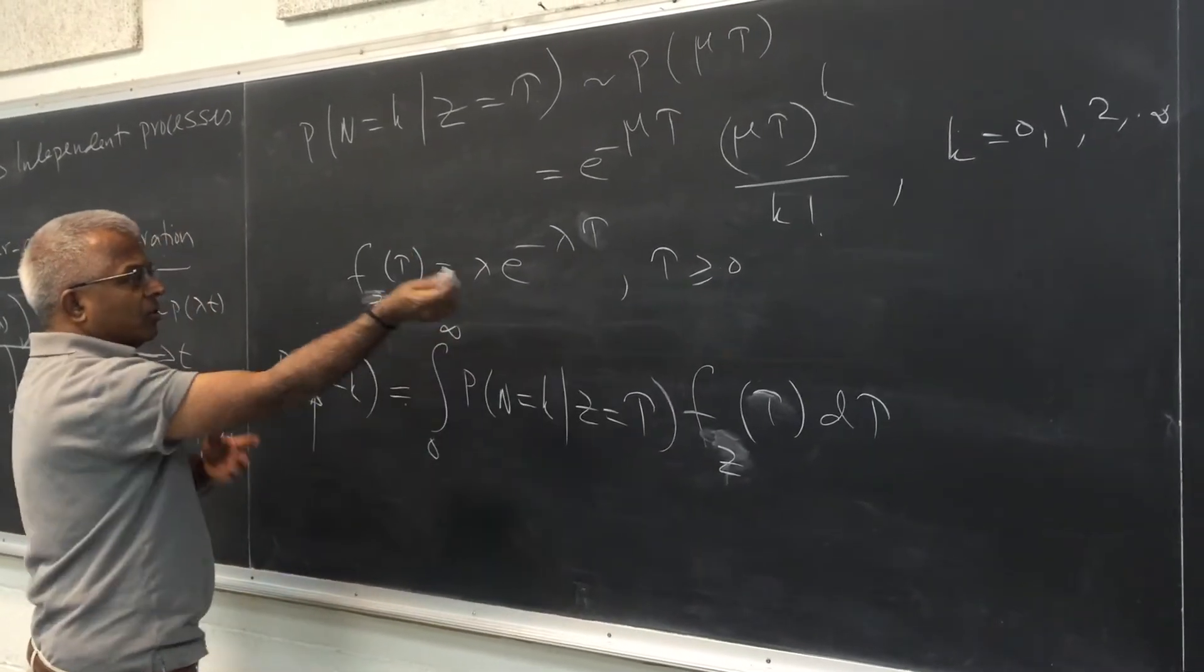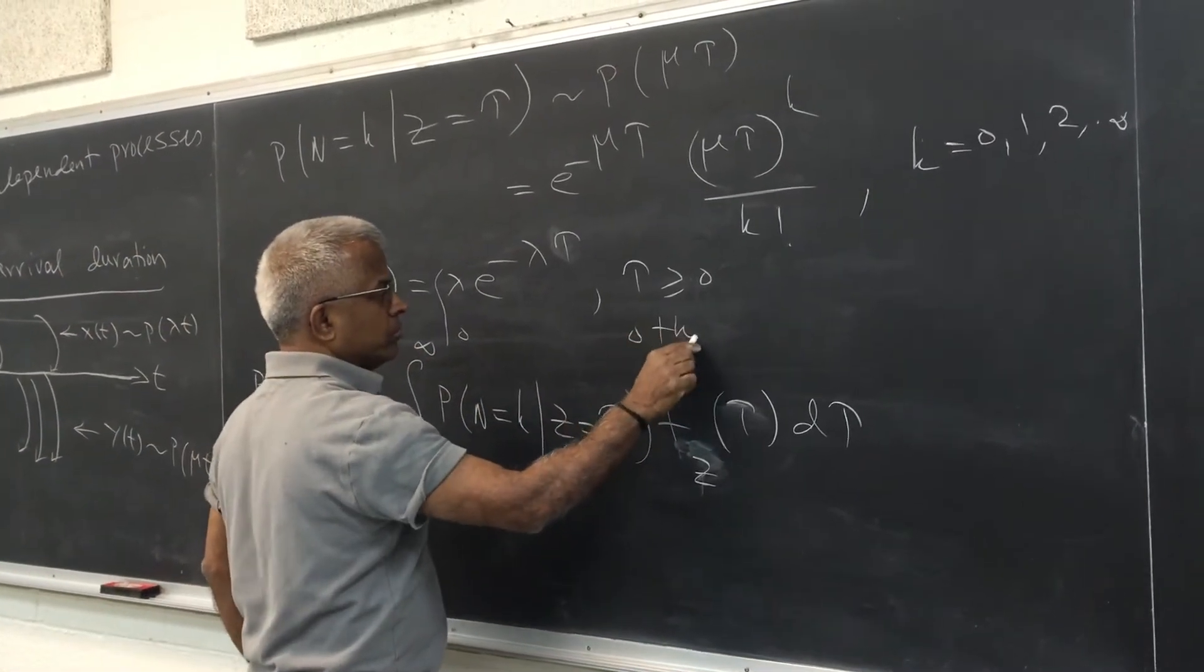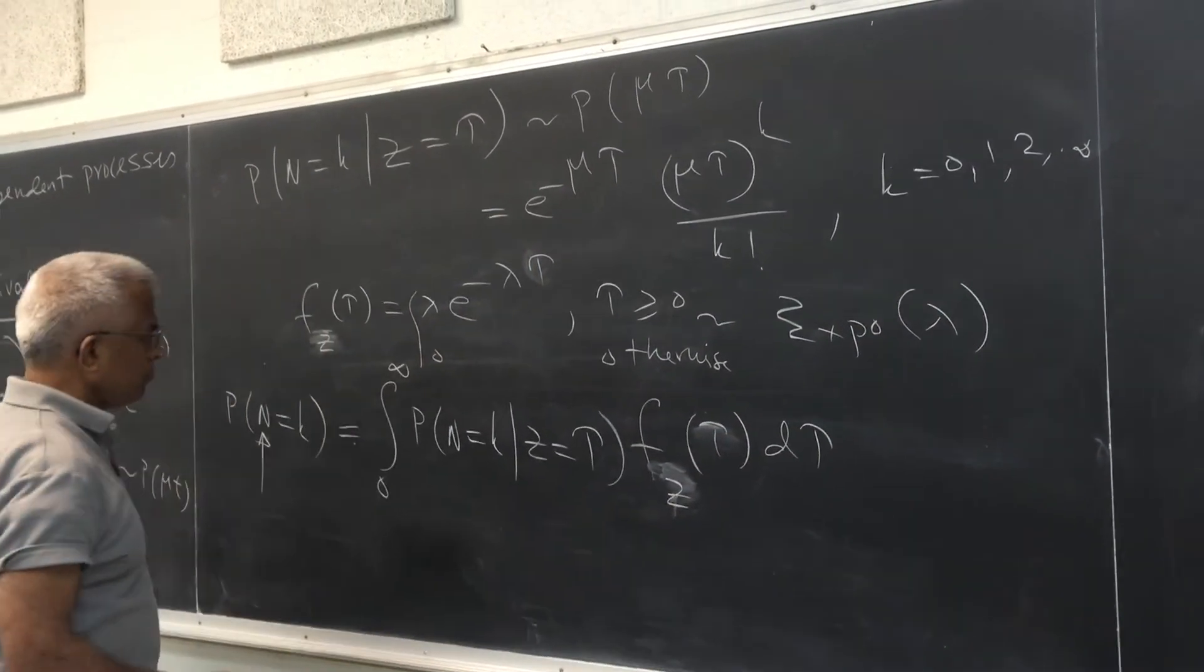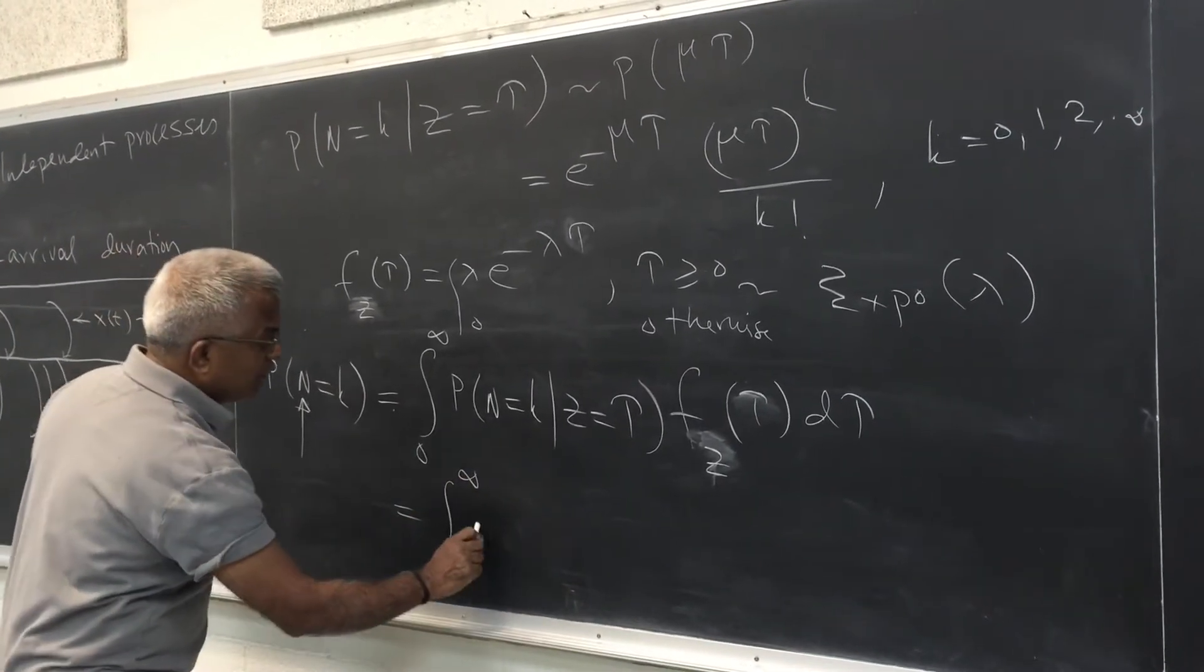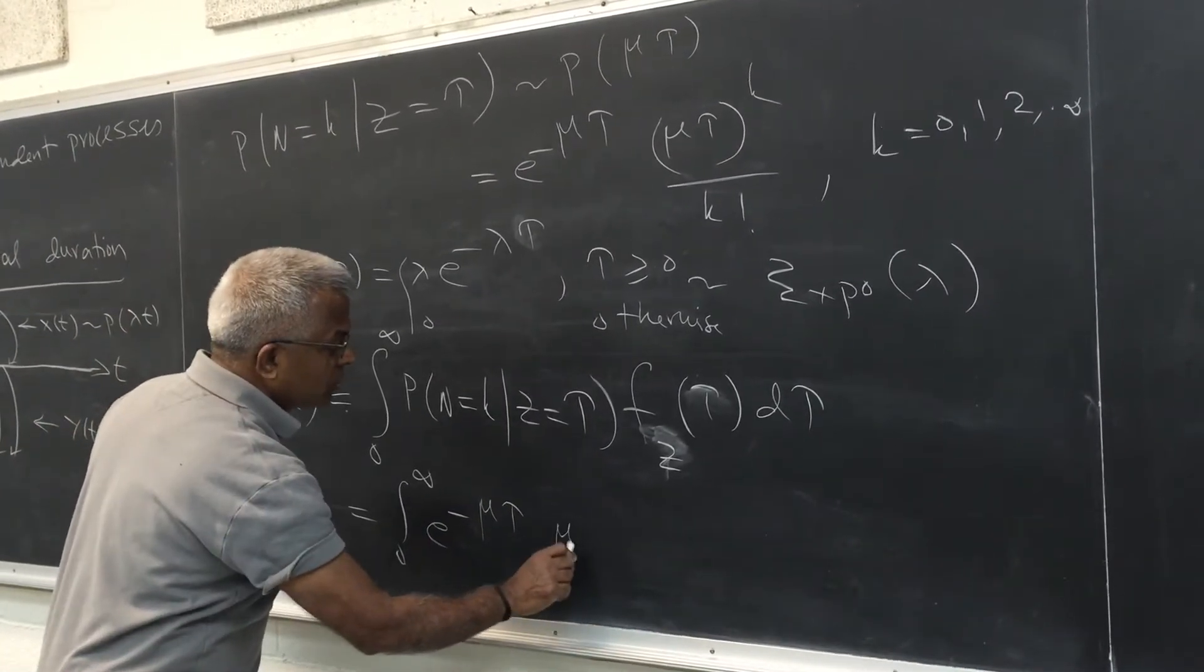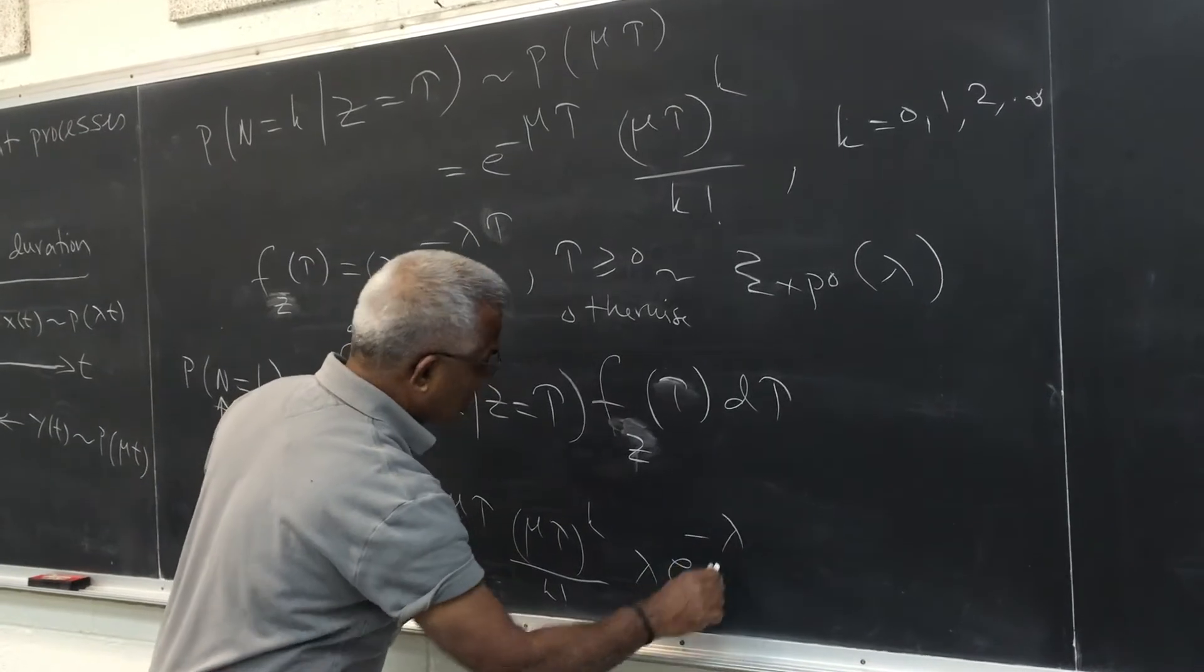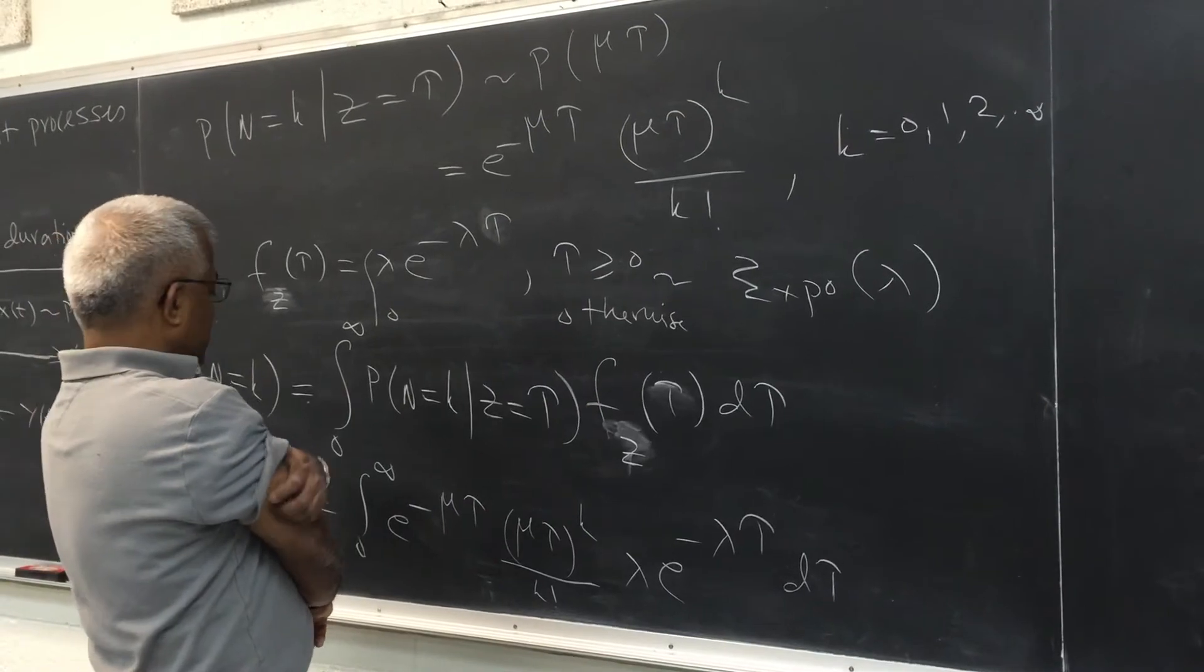So all we need is now substitute this parameter. So this is 0 to infinity because tau goes from 0 to infinity. So this is exponential with parameter lambda z. And so if I plug it in, this becomes integral 0 to infinity e raised to minus mu tau. So this is mu tau to the power k over k factorial. Then lambda e raised to minus lambda tau d tau.